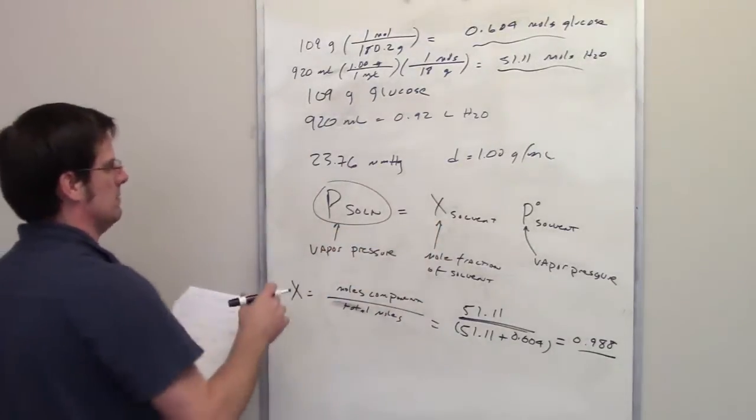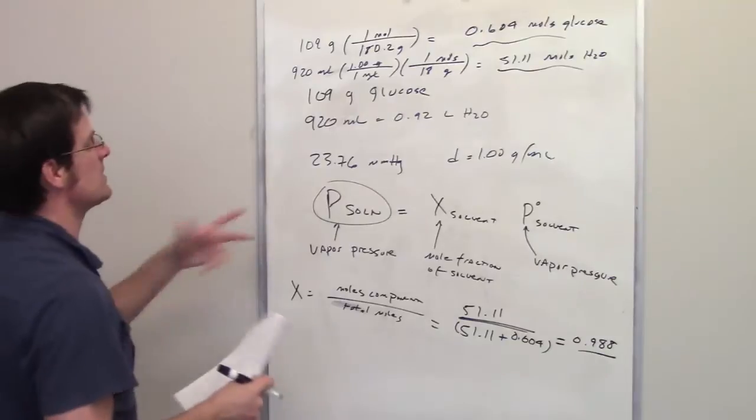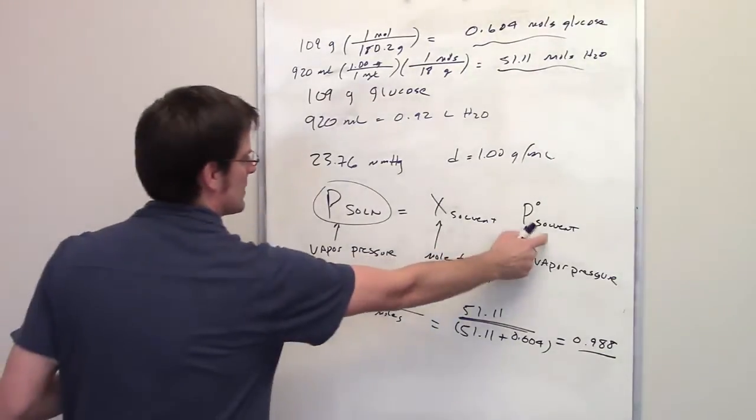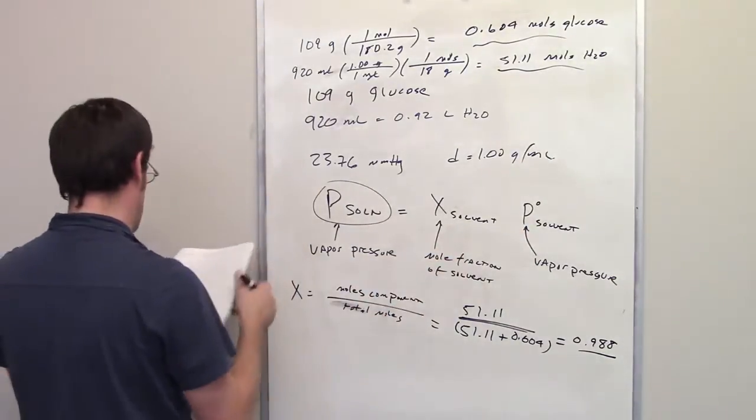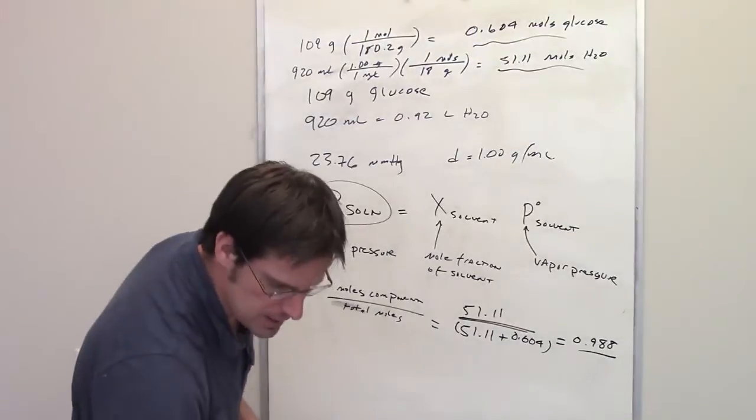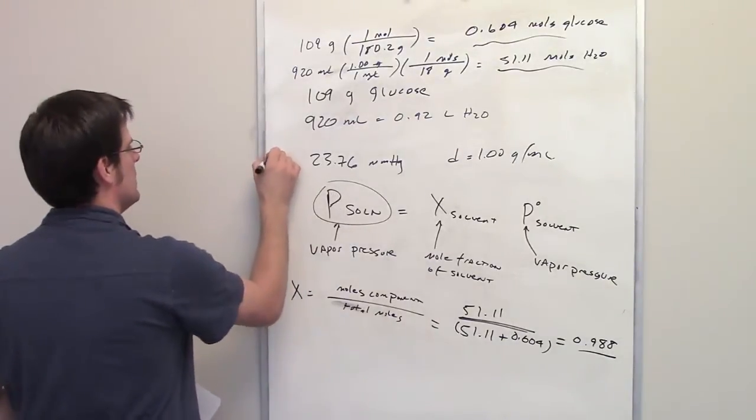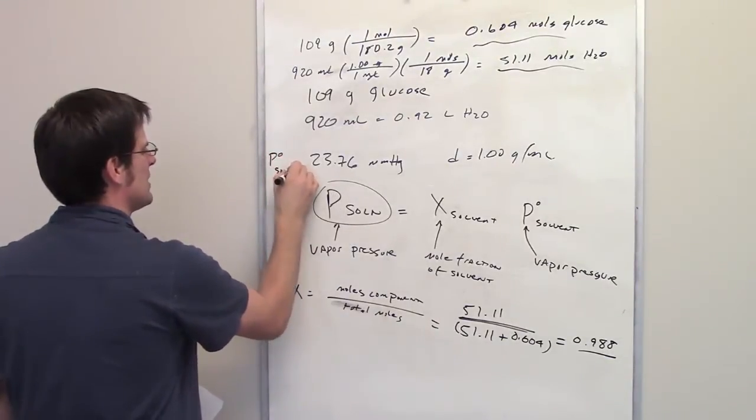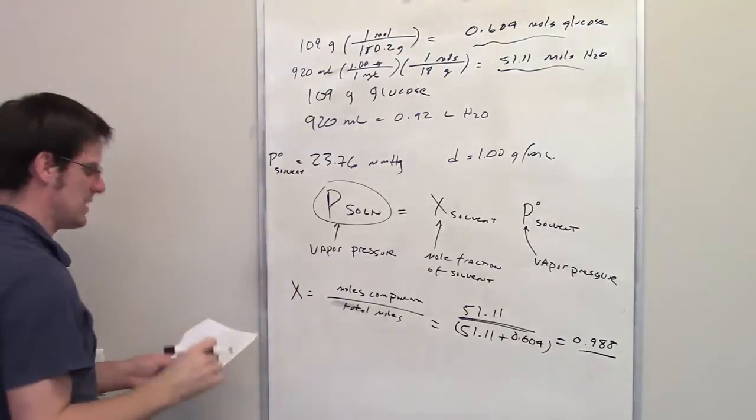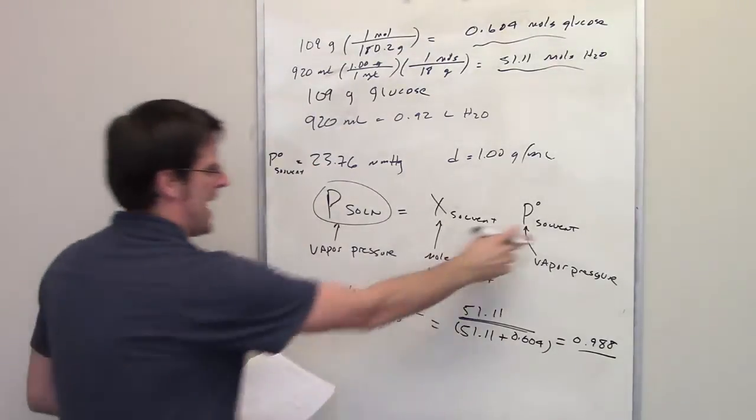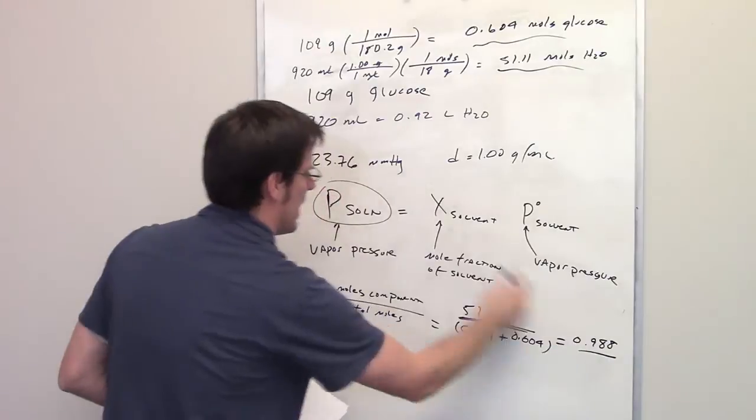The rest is not too bad because it tells us what the vapor pressure is for pure water in this problem at this temperature. This P solvent is 23.76 millimeters of mercury.